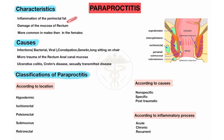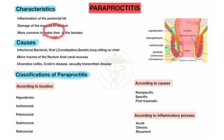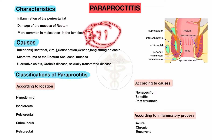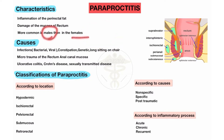Paraproctitis is the inflammation in the perirectal fat and damage of the mucosa of the rectum. In hemorrhoid or Piles disease, the condition mostly occurs in the submucosa region of the rectum, but Paraproctitis occurs mostly in the mucosa region of the rectum. Paraproctitis is most common in males compared to females, with approximately a 2:1 to 3:1 ratio.